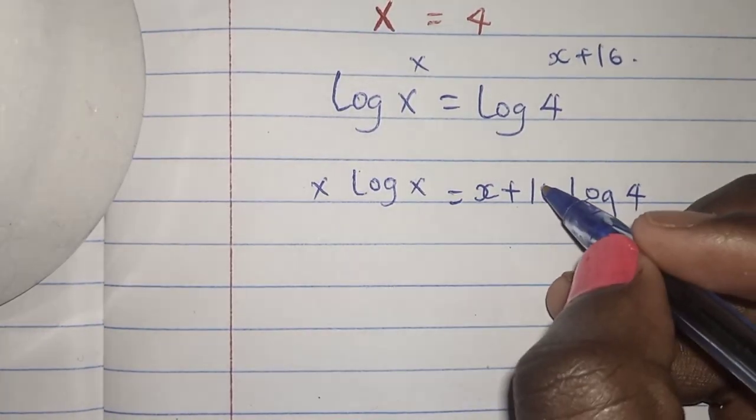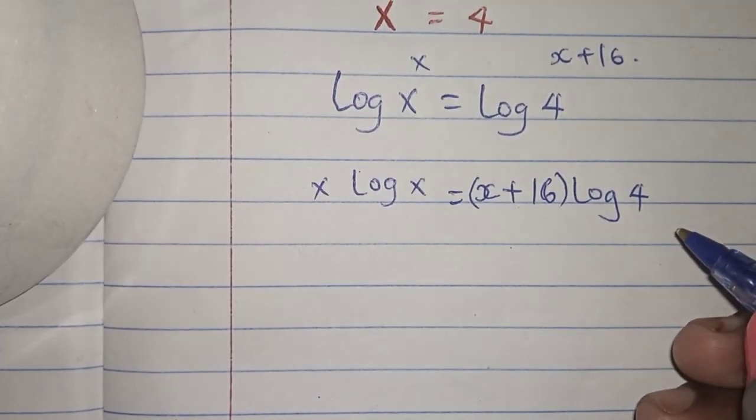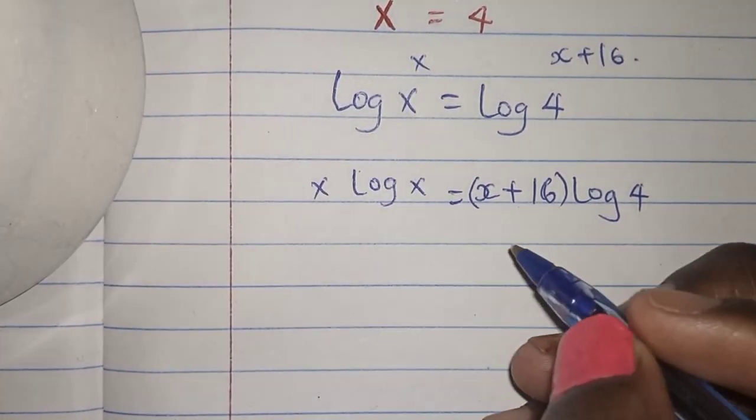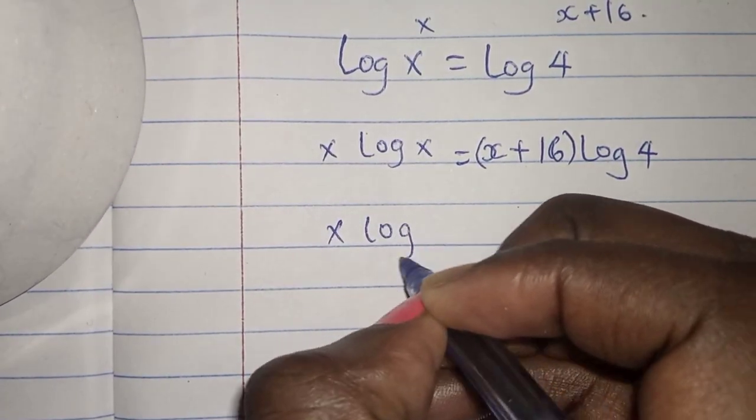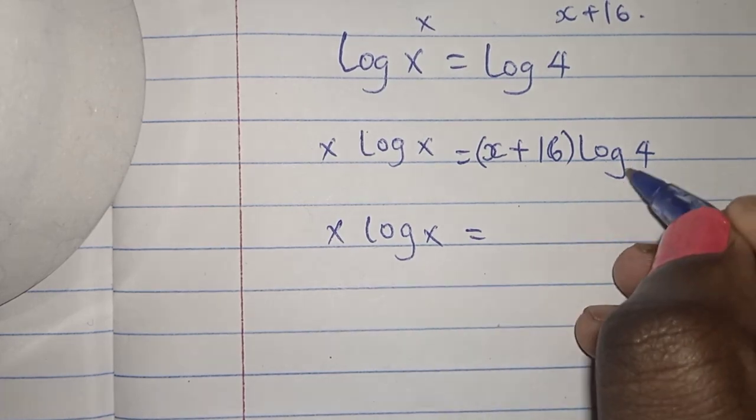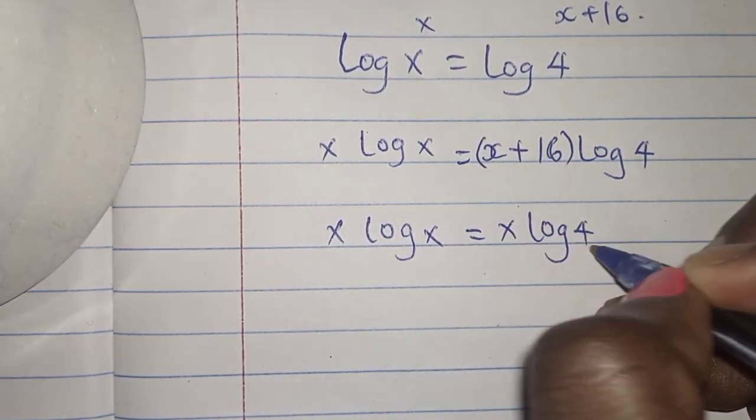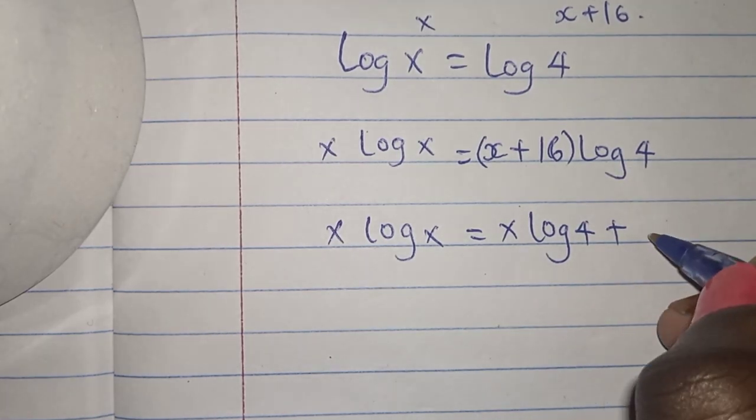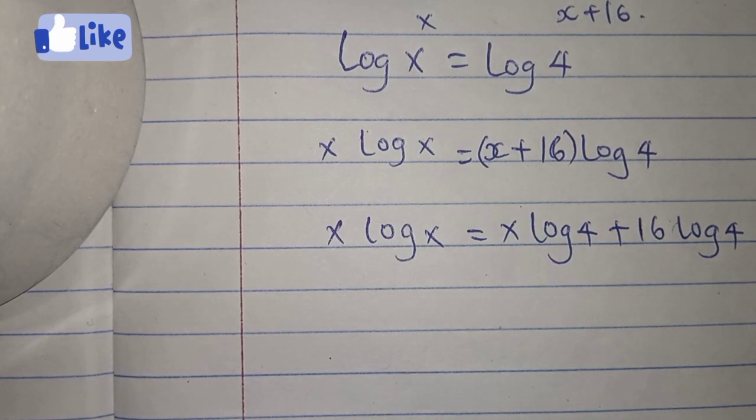So this is the first step. So let me place this into bracket. The next step, I'm going to open this bracket. x log x is equals to x log 4 plus 16 log 4. Have you seen that?